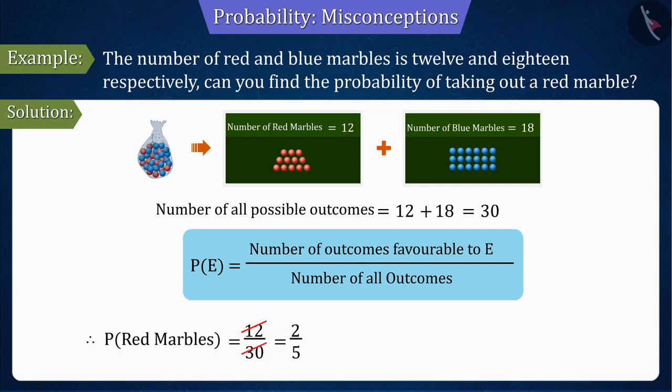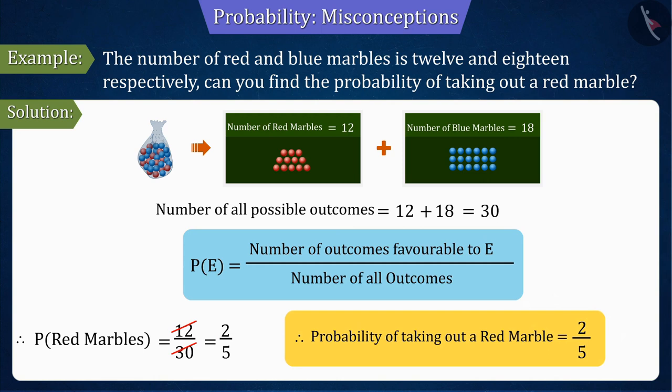On solving this, we get the probability of picking a red marble as 2 by 5. So, we can say that the probability of getting a red marble is 2 by 5.